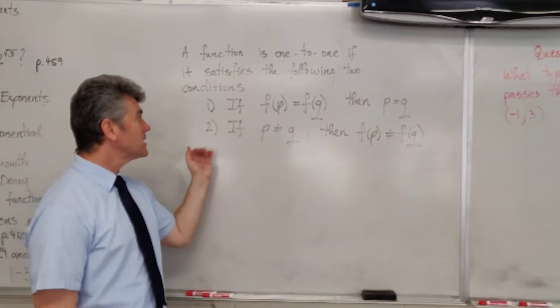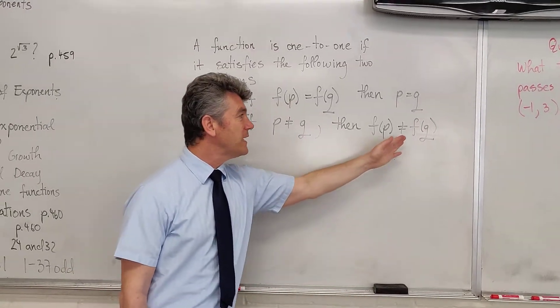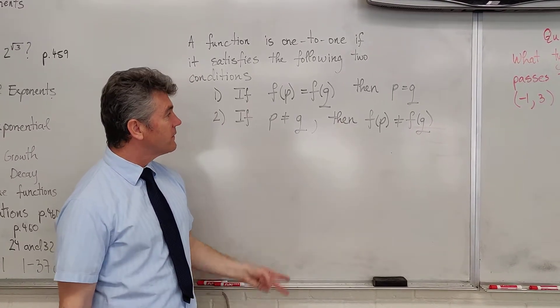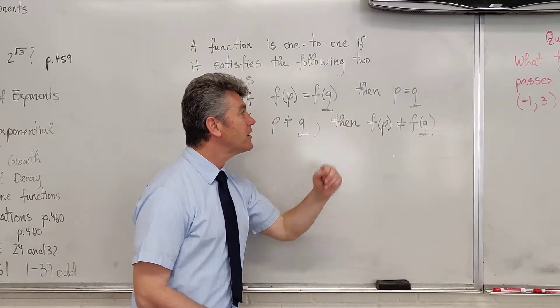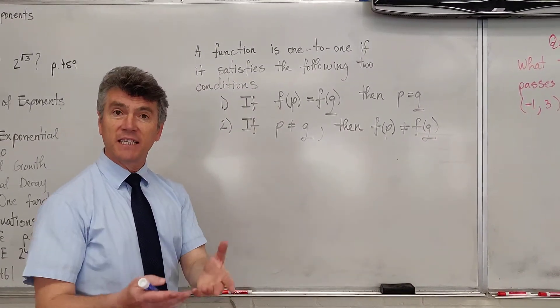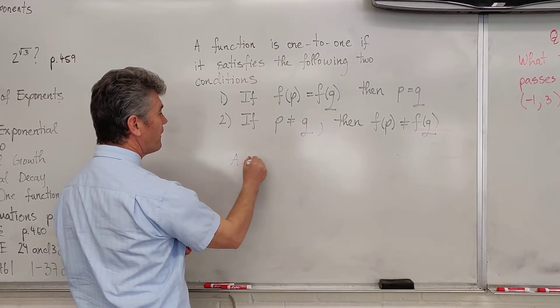The second condition is: if p and q are different than each other, then f of p and f of q must also be different. In other words, if two points have different x-coordinates, then the y-coordinates must be different as well.